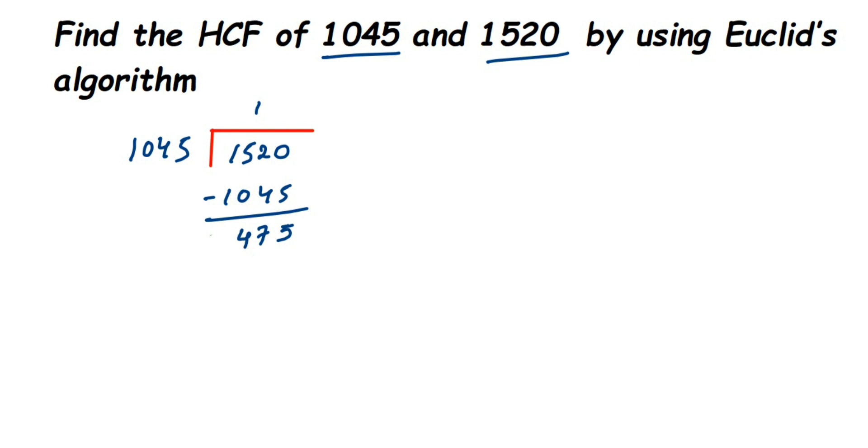Here the remainder is 475, which means we have to divide again. So with what number should you divide? 475 will become your divisor, and your dividend will be the divisor in the previous step. In the previous step, the divisor was 1045, that will become your dividend for the second step.